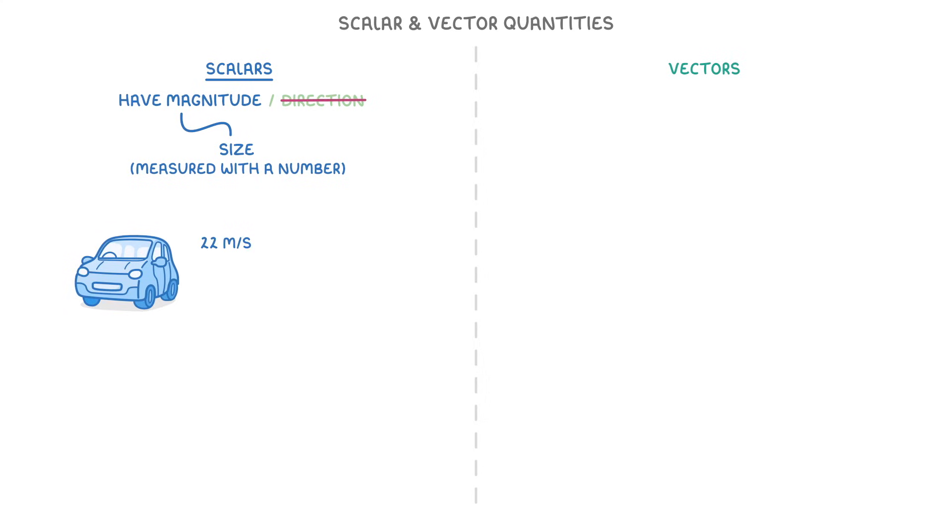For example, if a car travels at 22m per second, 22 would be the magnitude of the speed. And because speed by itself doesn't have a direction, we consider it a scalar quantity.